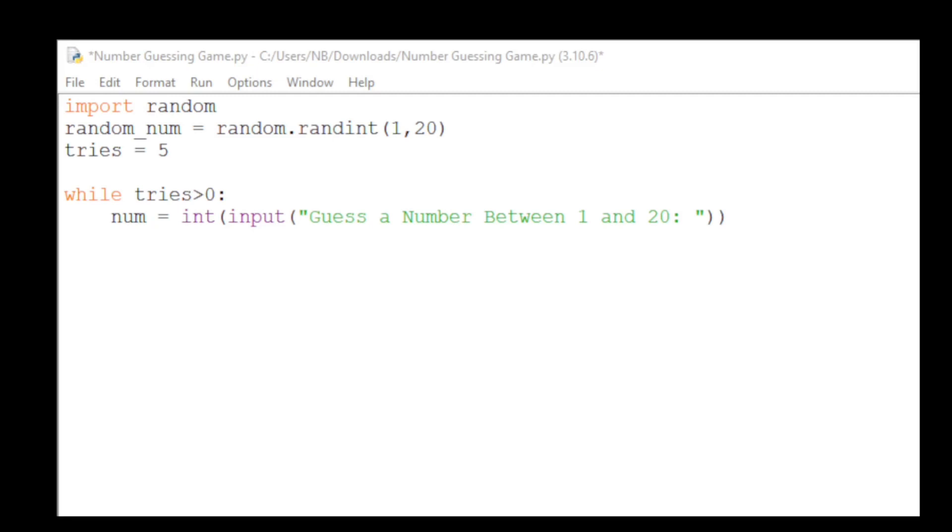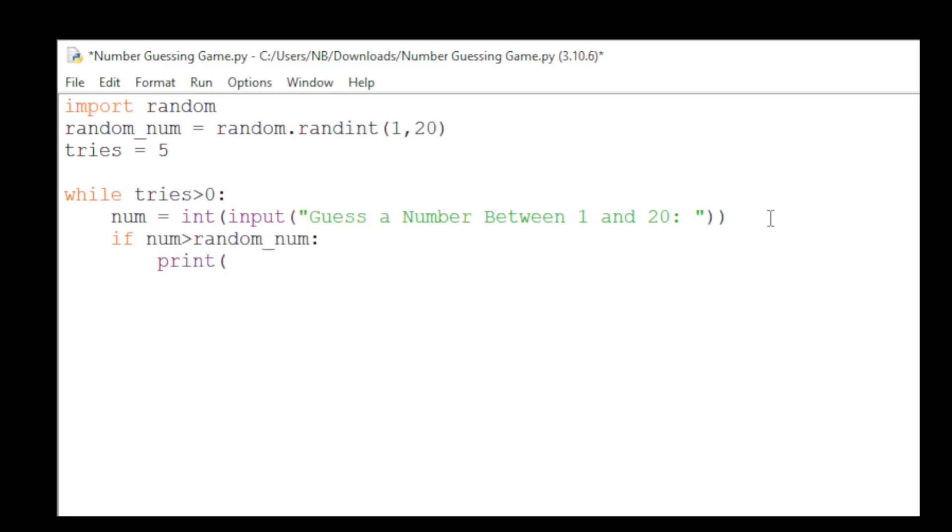Now, we will check if the number is greater than, less than, or equal to the random number that is generated. To do this, we will use an if statement, a concept we learned previously. We will type if num is greater than the random number, then we will print too high, since the number is greater than the random number.